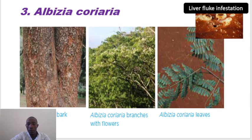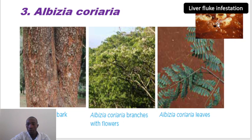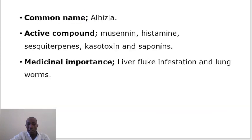The next plant is Albizia coriaria, and this has various species — we have Albizia amara and Albizia coriaria. This is how it looks: the bark and the leaves. It's used to treat internal worms; for example, we have the liver flukes. We can see here a liver that has been infested by flukes — it really causes loss to the farmer because during meat inspection, a liver infested by flukes is always condemned. Albizia contains various active compounds: we have sarkonins and histamines. It's also used in treatment of lung worms.